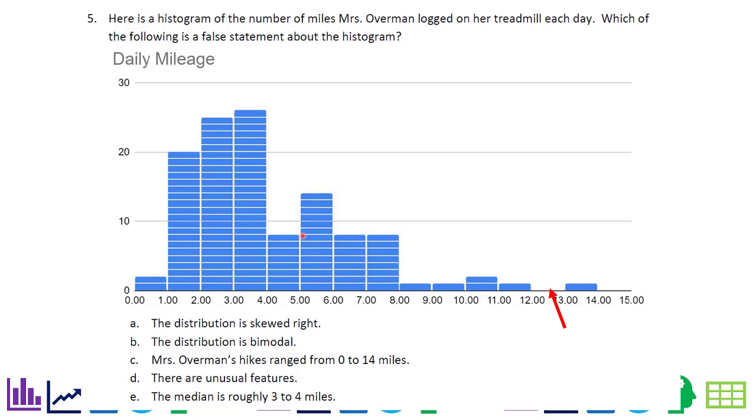Now we have a histogram of the number of miles I logged on my treadmill each day. Which of the following is a false statement? By the way, this is true data. This should be from the summer of 2022 when I was able to get a lot of miles on that treadmill.